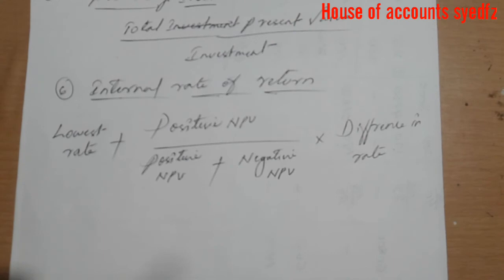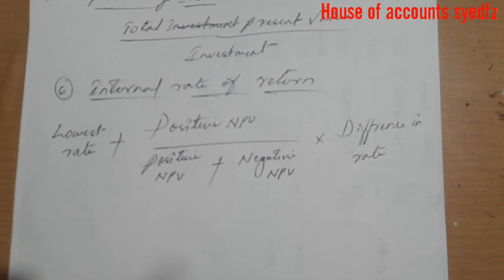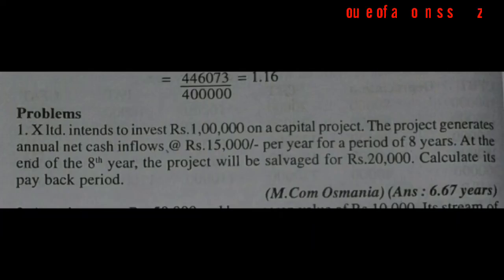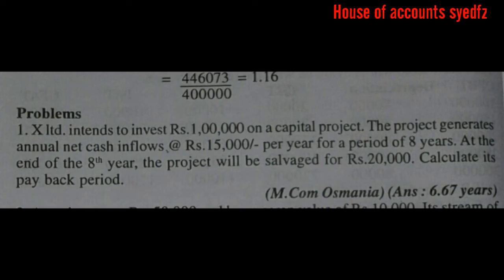These are the main formulas of fundamentals of capital budgeting — the formulas used by management to make investment decisions. For example, here is a problem: X Limited intends to invest 1 lakh rupees on a capital project. The project generates annual net cash flow of 15,000 per year.